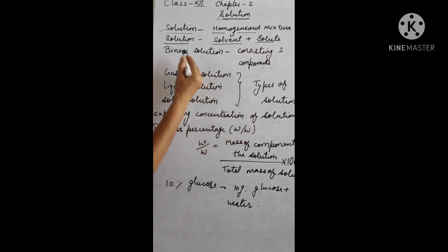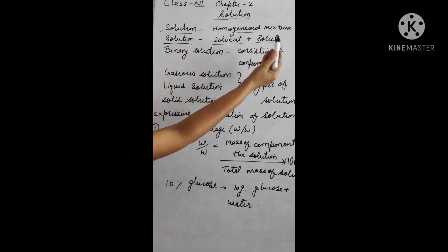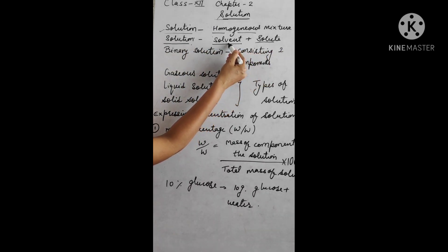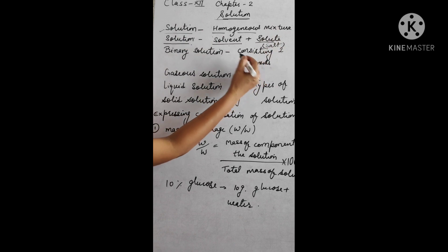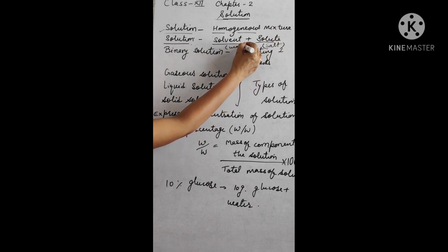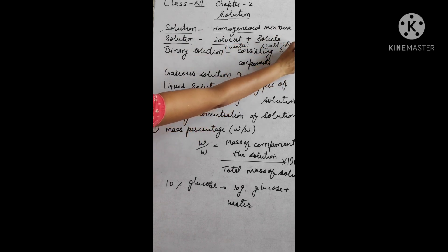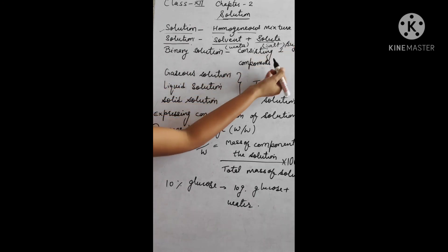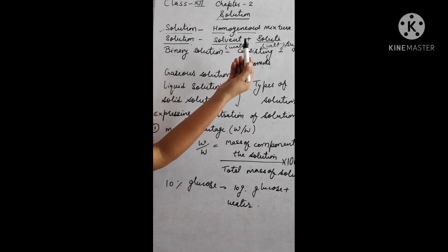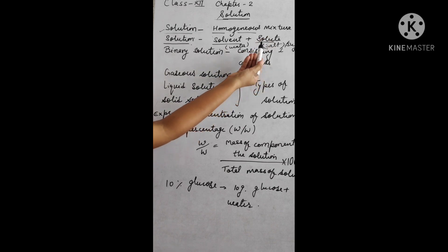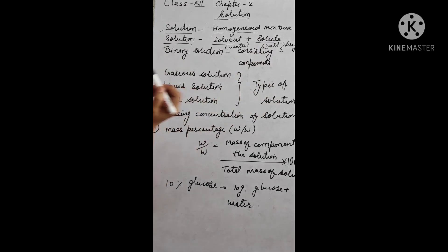We use two terms: solvent, which is present in the largest amount, and solute, which is in lesser amount. For example, when we mix salt in water, salt acts as solute and water acts as solvent. Similarly, when we mix sugar in water, sugar is the solute and water is the solvent. Solvent and solute may vary and can have different physical states.